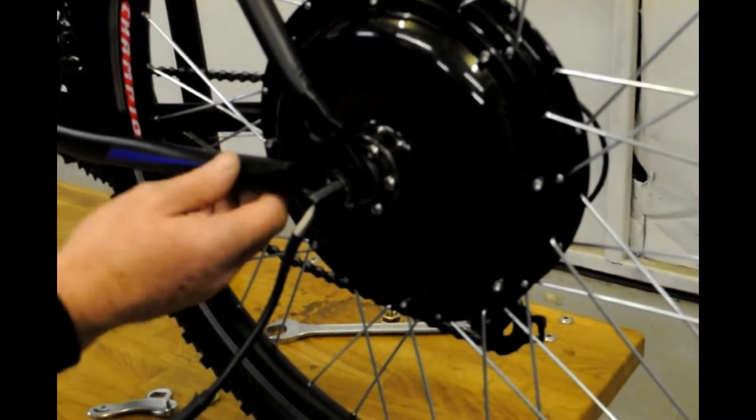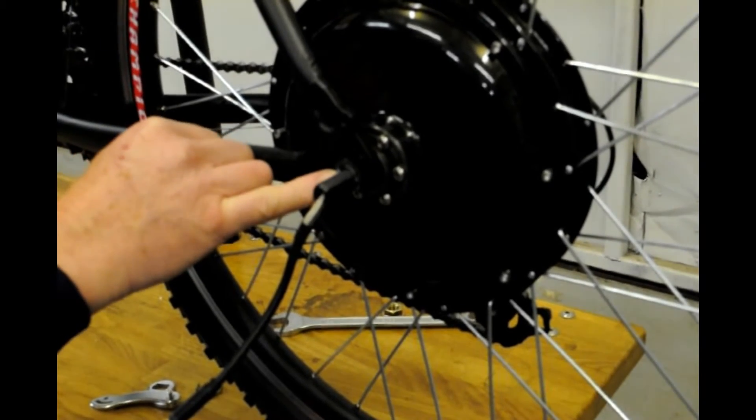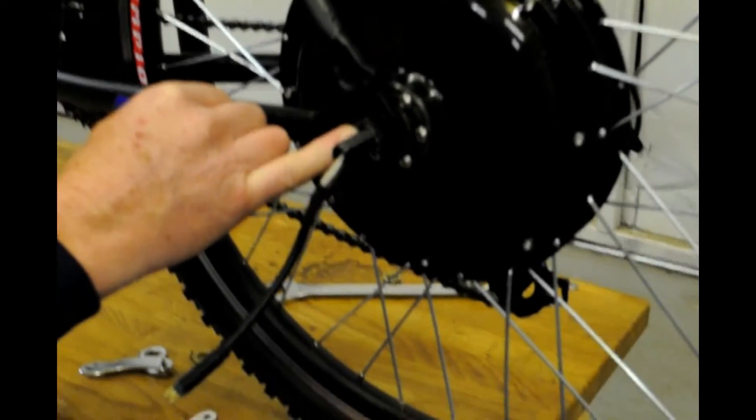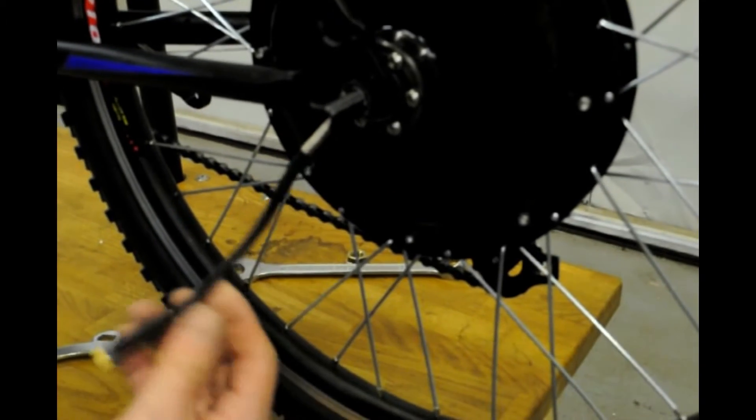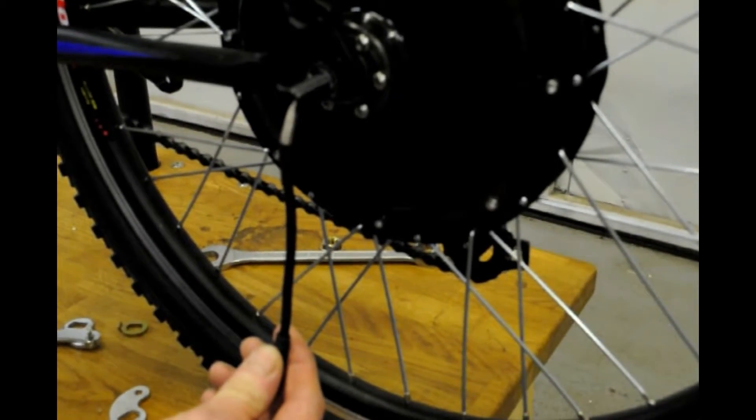Once you have offered the wheel into the frame make sure the axle is tight up against the end of the forks. Also ensure that the wire is going downwards to stop water ingress.